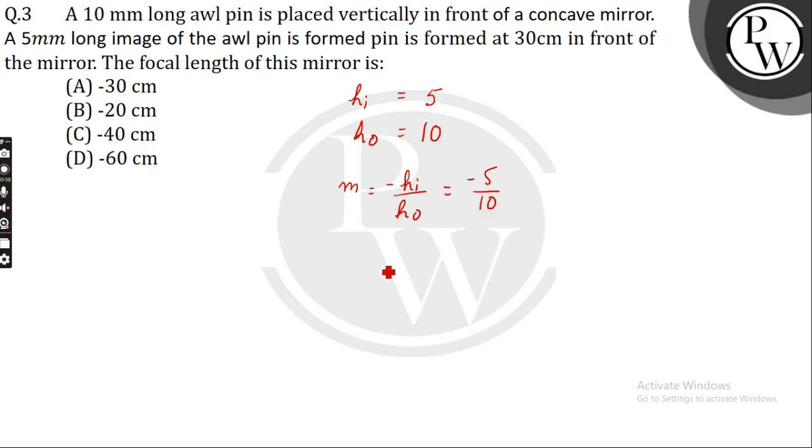There is another formula for magnification, which is v by u. So we can write m equals v by u, and substituting, minus 5 by 10 equals v by u.